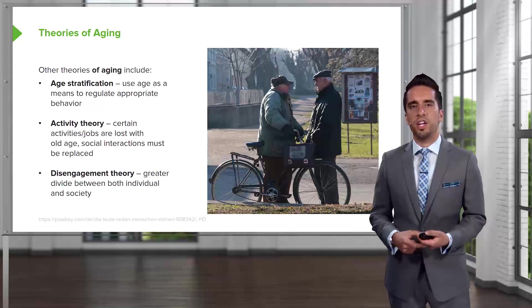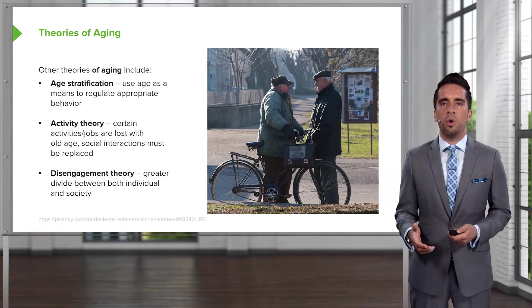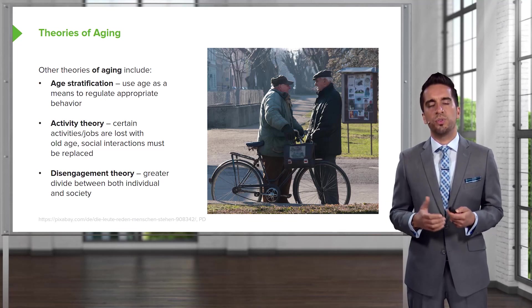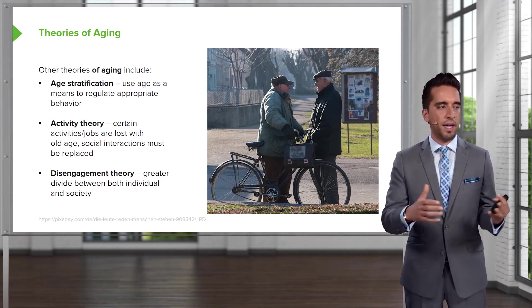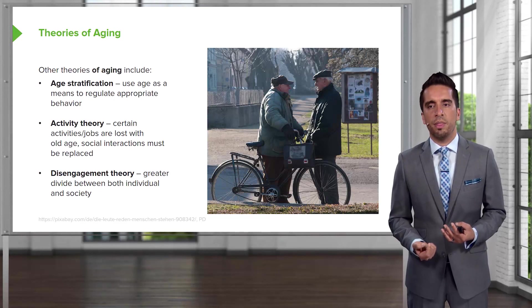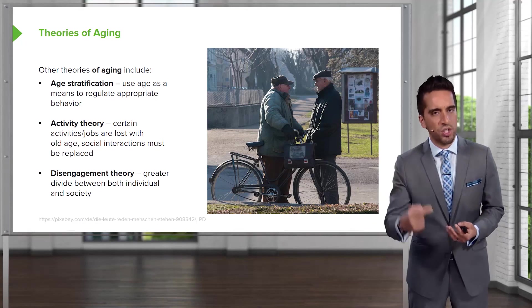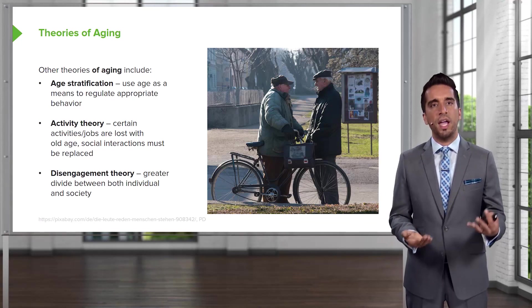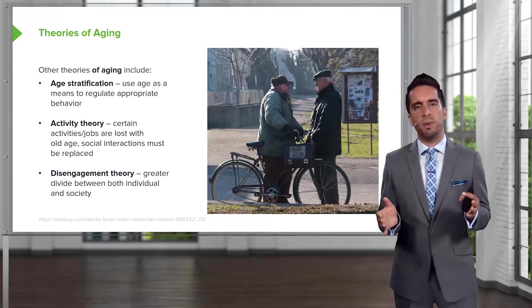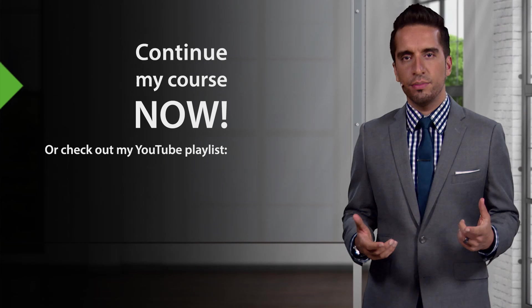There's also disengagement theory, where we recognize a greater divide between the individual and society as you get older. As you age, sometimes you withdraw — and younger individuals may avoid engaging with the elderly because they're no longer in the workforce or sharing the same day-to-day life. We start to see this divide. Consciously, we need to be aware that we shouldn't be segregating or excluding people based solely on age.